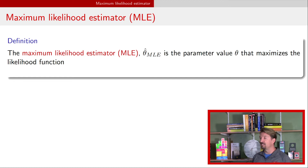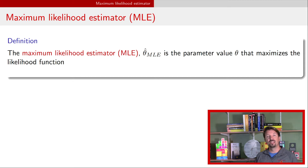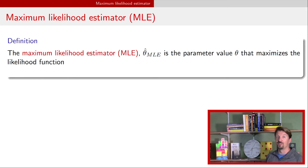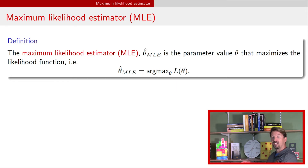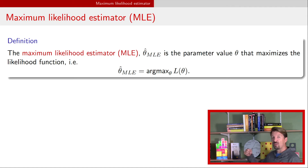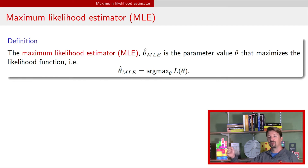The definition of the maximum likelihood estimator, here denoted by theta hat with a subscript MLE, is the parameter value for theta that maximizes the likelihood function. Written mathematically, we have on the right side the argument max of the likelihood function. What that arg max means is: find and try all the different values for theta, find the one value that maximizes that likelihood, and return it — which is why we have theta hat MLE on the left side.